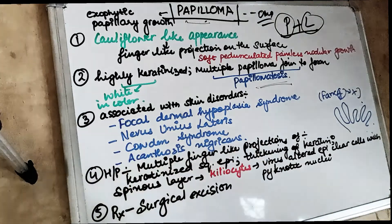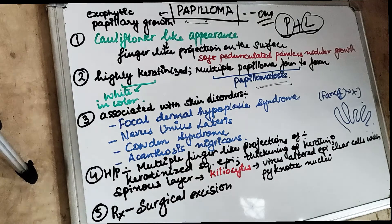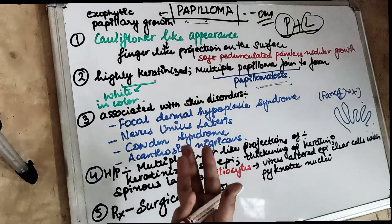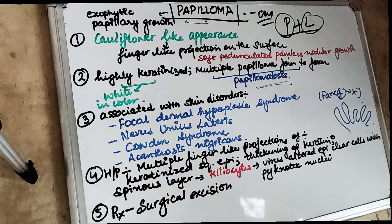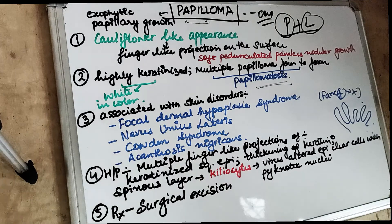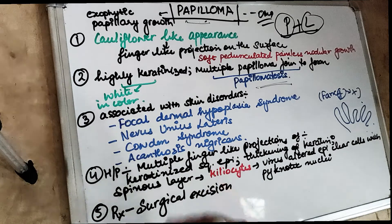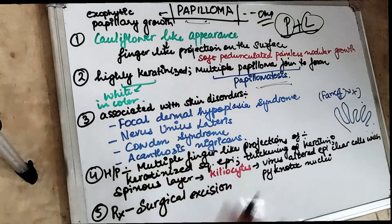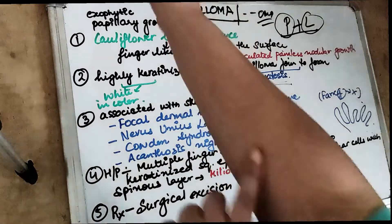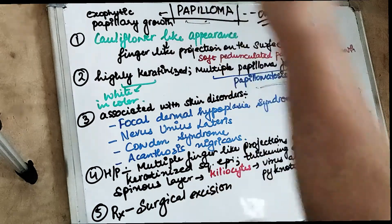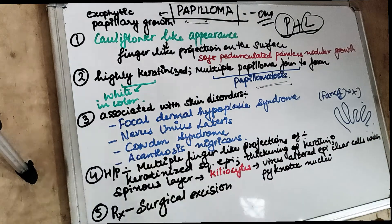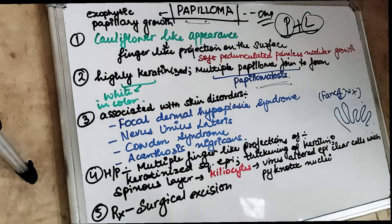Next is nevus unius lateris. As the name suggests, it is a pigmented or nodular growth. 'Unius' means there is a unilateral pattern, and 'lateris' means this unilateral papillomatous growth is seen on the lateral surface of the body — involving mostly the lips or lateral surface. Then comes Cowden's syndrome, which is basically a non-cancerous tumour-like growth called hamartomas, with increased risk of cancer. Finally, acanthosis nigricans shows hyperpigmentation with dark, velvety patches — especially in the neck area with folds and creases. All of these syndromes are associated with papilloma.